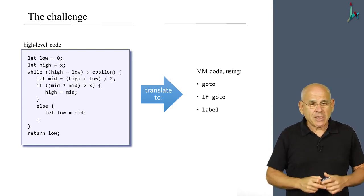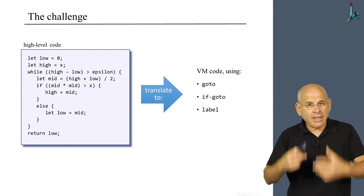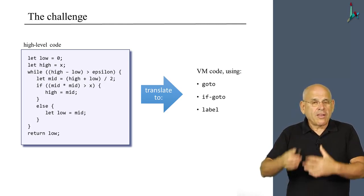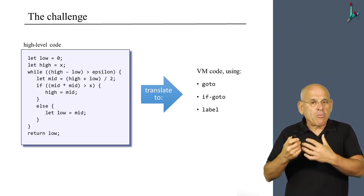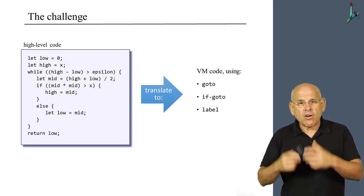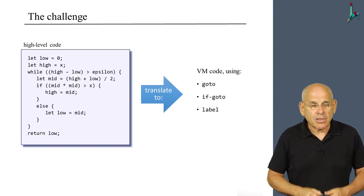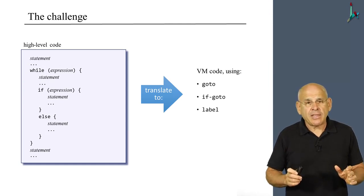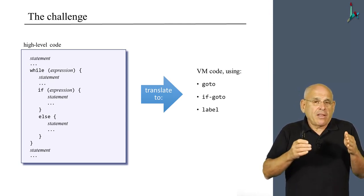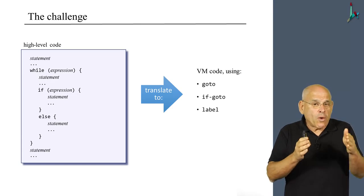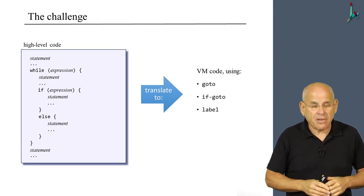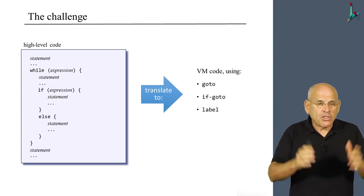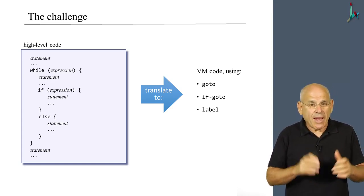The challenge is to translate while and if statements into code that involves the three branching commands of the VM language: goto, if-goto, and label. The first thing to observe is that we have very structured, well-structured patterns here. Once we focus on the patterns, everything becomes much easier to comprehend and handle.